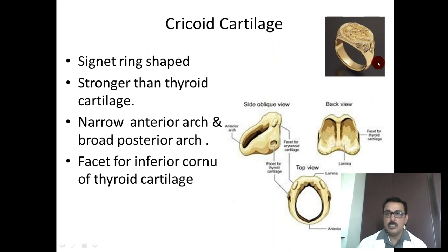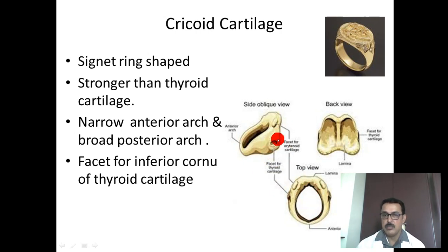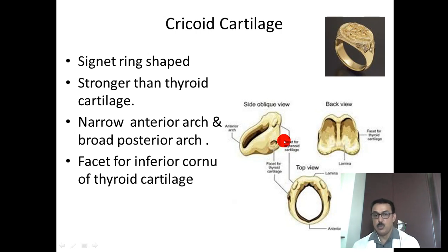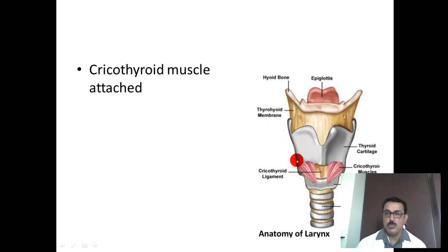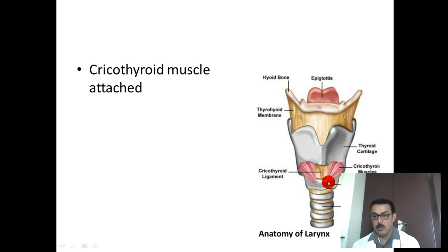The cricoid cartilage is like a signet ring with an anterior arch and a posterior arch. The anterior arch is narrower compared to the taller, broader posterior arch. On the lateral aspect is a facet for the inferior cornu of the thyroid cartilage. The lower border of the thyroid cartilage gives origin to the cricothyroid muscle, which goes downward and forward to attach to the anterior portion of the cricoid cartilage.